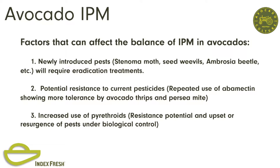There are a few factors that can affect the balance of IPM in avocados. Newly introduced pests—the three listed are the three we're probably most concerned with at this point. Dr. Hoddle has pounded that away at us. Resistance is another way to get your IPM out of balance, and that specifically refers to the use or overuse and abuse of abamectin. We've all been using it repeatedly. Dr. Joe Morris—that was his last concern before he retired—said we are getting tolerance to abamectin from avocado thrips and perseamite. He documented it.